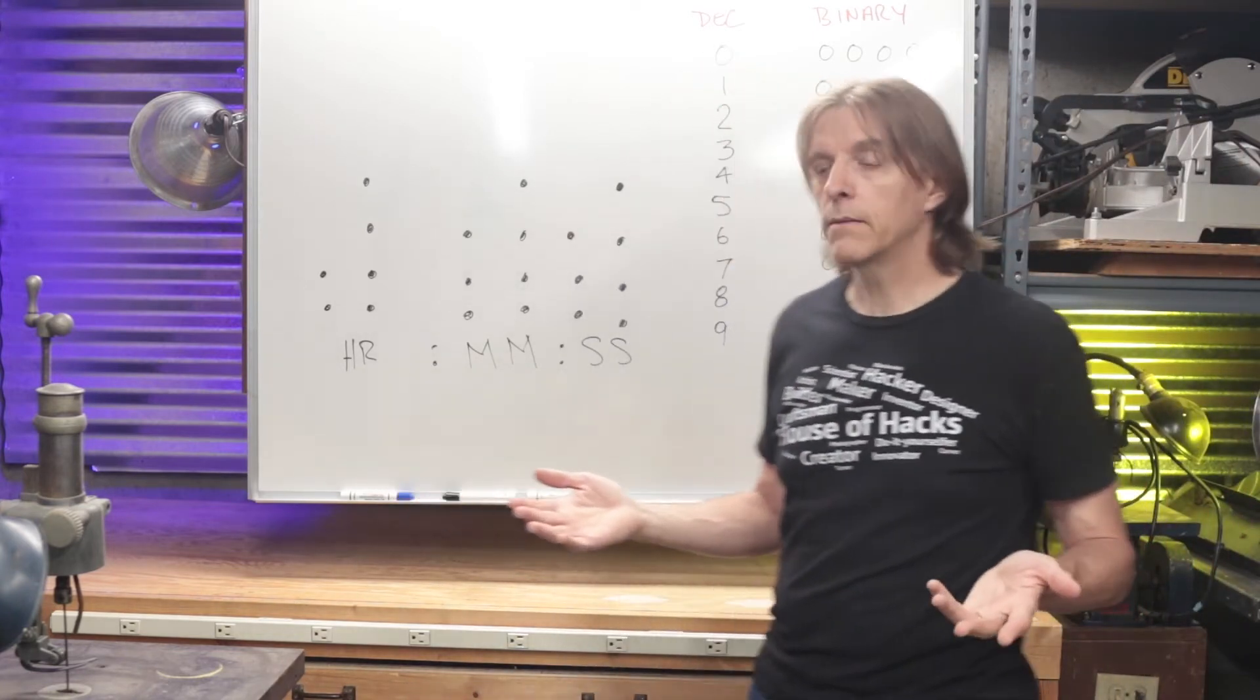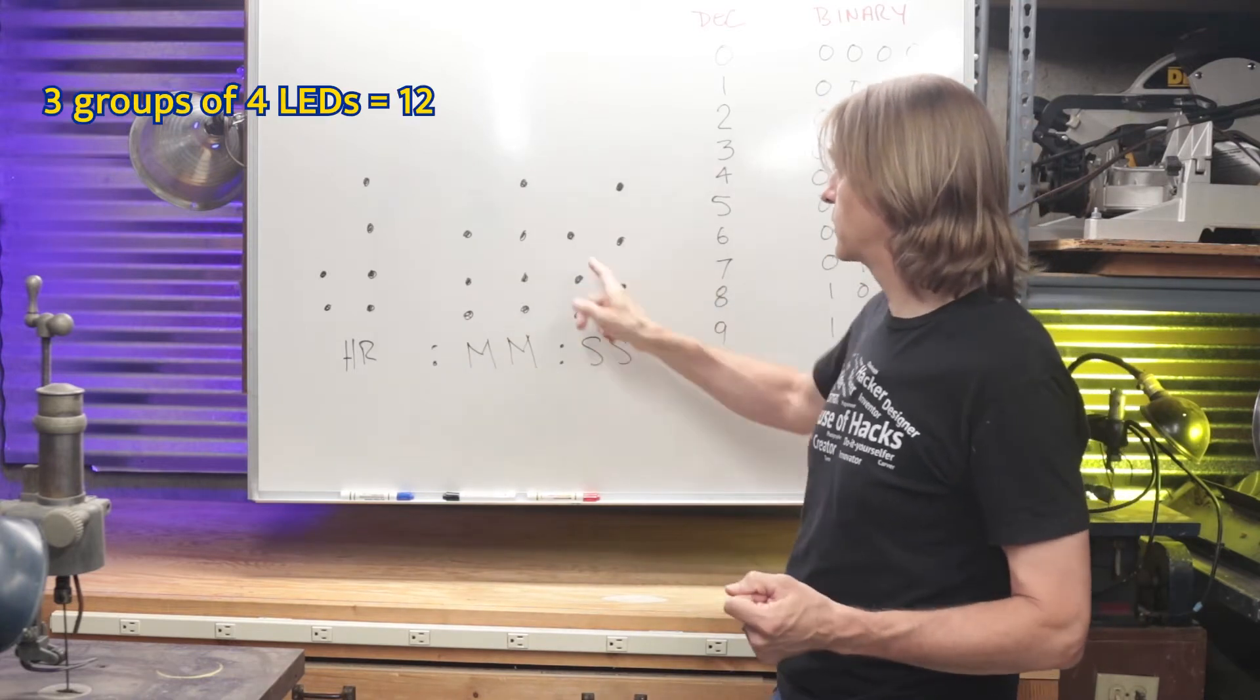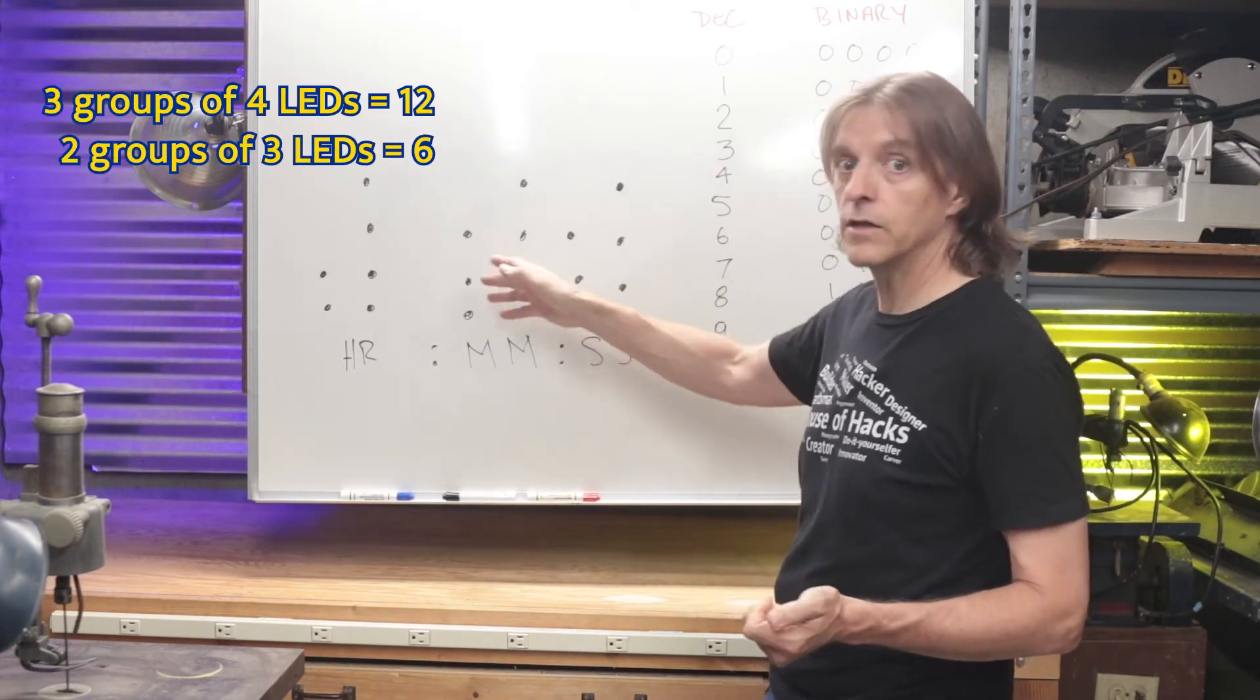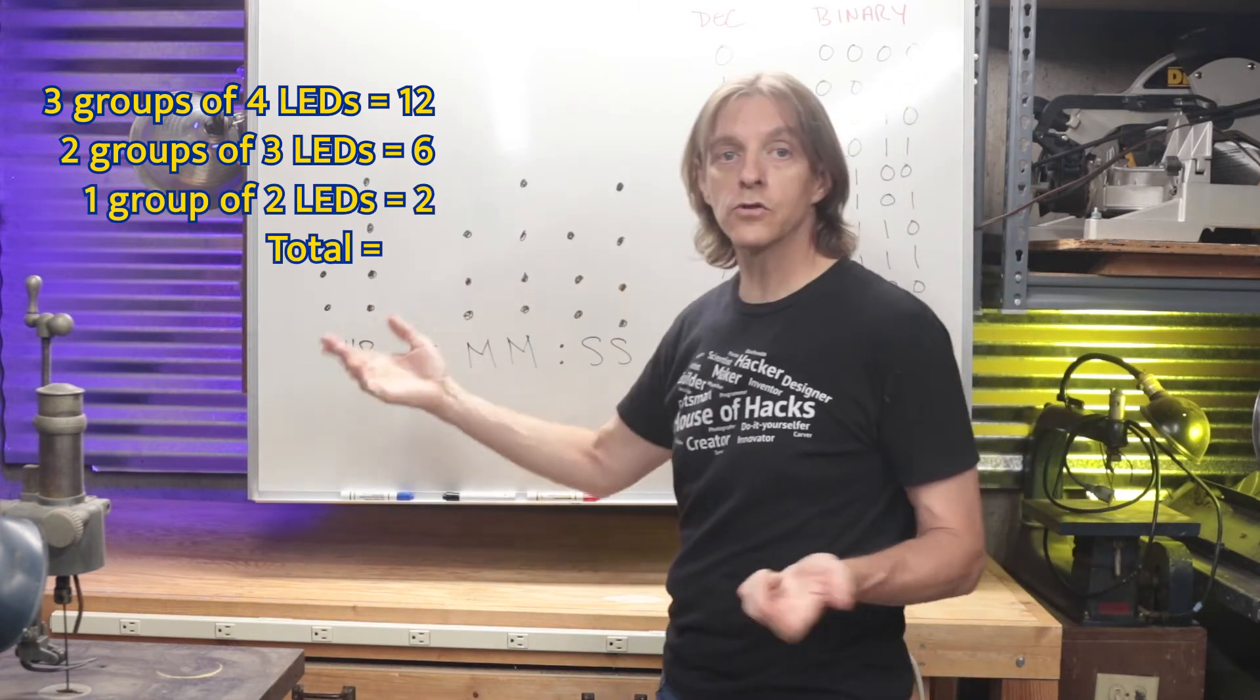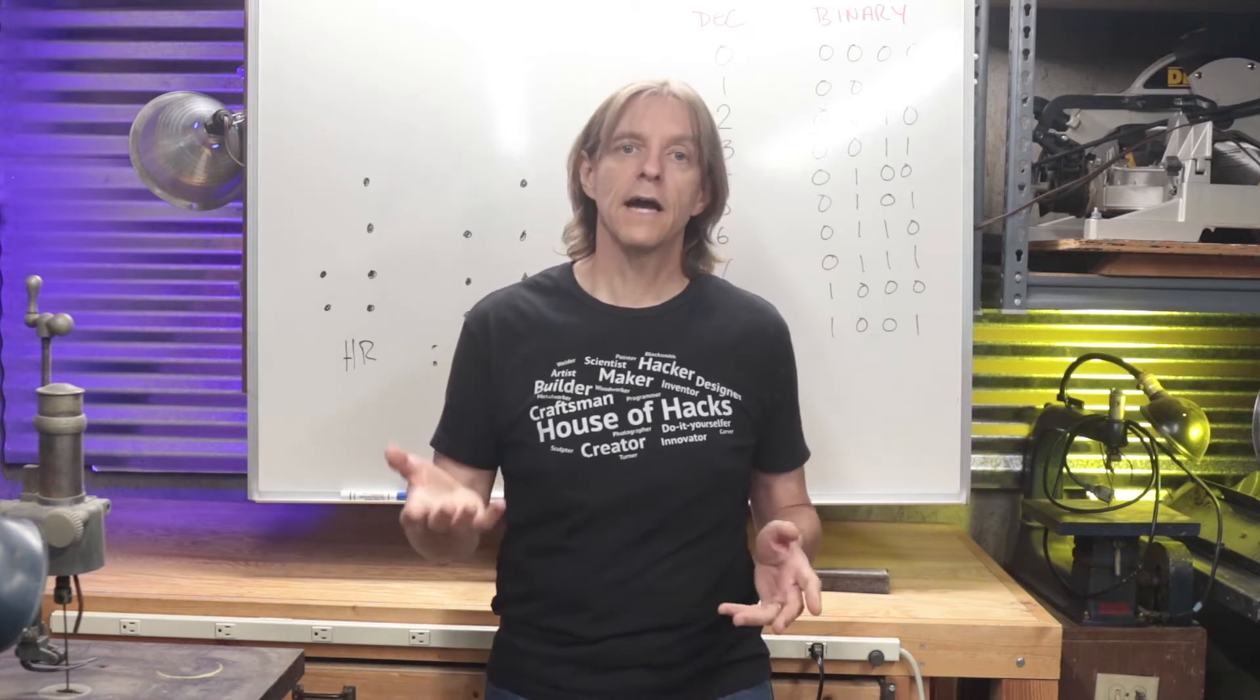So to make this, what are our requirements? For the LEDs, we have 3 groups of 4 and 2 groups of 3 for a total of 18, and another 2 for a total of 20 LEDs that we need to control. Second, we need a way of keeping track of the time. And third, we need a way to set the time.